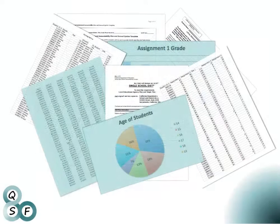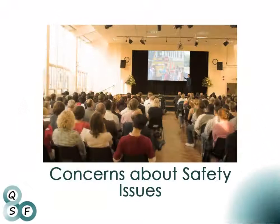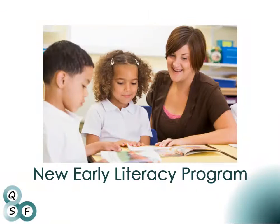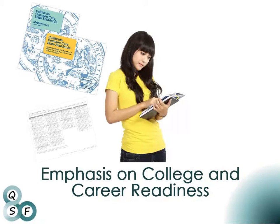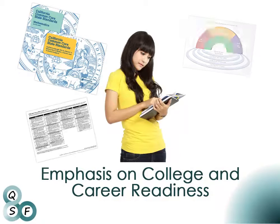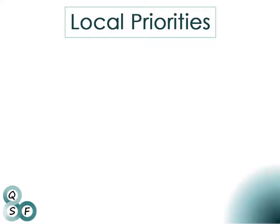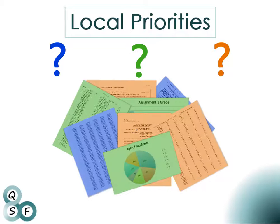To select the right data for the needs assessment, start by reviewing local priorities. For example, the local school board may be concerned about safety issues, elementary schools may have recently begun a new early literacy program, or the district may be supporting a new state and federal emphasis on college and career readiness. With these local priorities in mind, determine the questions on which the needs assessment will focus. The focus questions will guide the selection of data sources for the needs assessment.